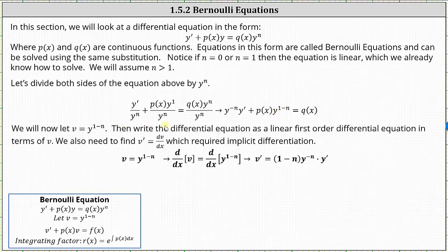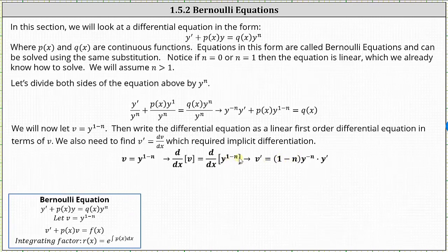The next step is to write the differential equation as a linear first order differential equation in terms of v. Before we do this, we need to find v prime by differentiating both sides of the equation v equals y to the power of one minus n with respect to x. This gives us v prime equal to the quantity one minus n times y to the power of one minus n minus one, which gives us y to the power of negative n times y prime.